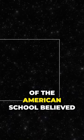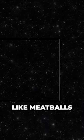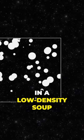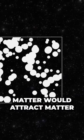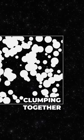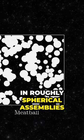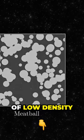He and others of the American school believed that matter in the universe was organized like meatballs in a low-density soup. Matter would attract matter, which would attract more mass, clumping together in roughly spherical assemblies, leaving vast areas of low density.